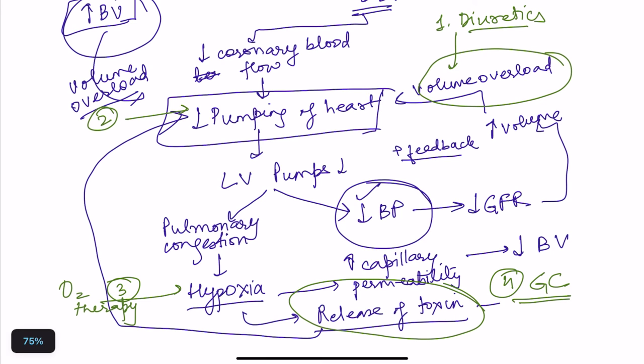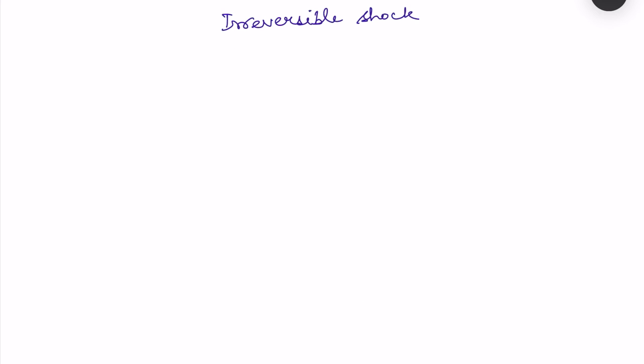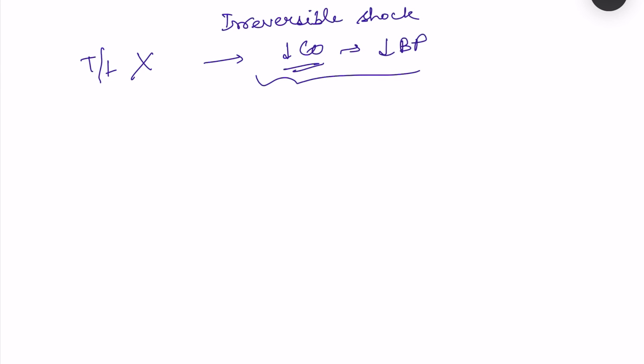Now let's discuss the third stage — irreversible shock. Irreversible shock occurs when whatever treatment is given doesn't work and we cannot restore cardiac output and blood pressure to normal. Sometimes briefly cardiac output and blood pressure appear to normalize, but after some time there is further deterioration and the shock progresses again.